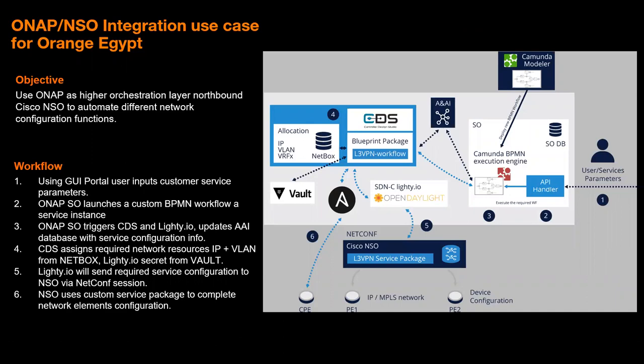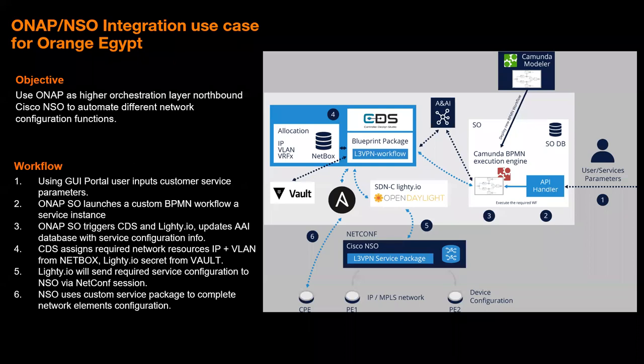This slide shows a quick overview of the architecture used in the use case with Orange Egypt — an overview of the ONAP framework alongside NSO. Starting with the flow, we first design a workflow agreed with the operator to define what use case needs to be developed and what workflow is needed to achieve end-to-end instantiation of a service instance. We designed this workflow and built it using Camunda Modeler, so that it will run in the Service Orchestrator's Camunda BPMN execution engine.